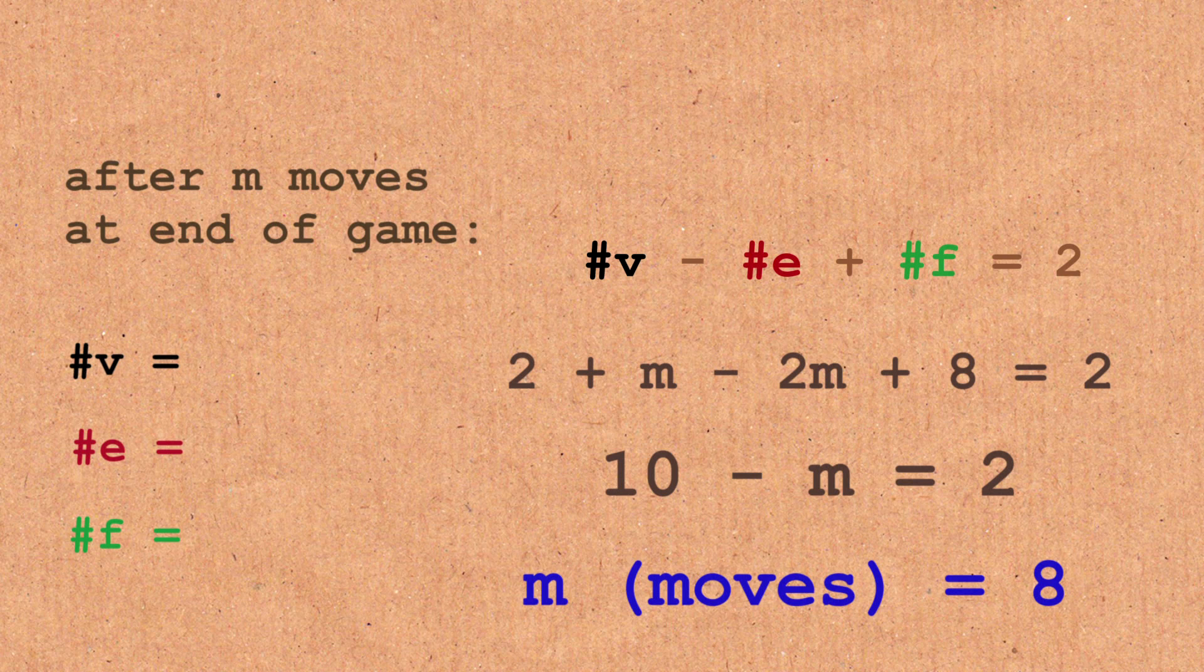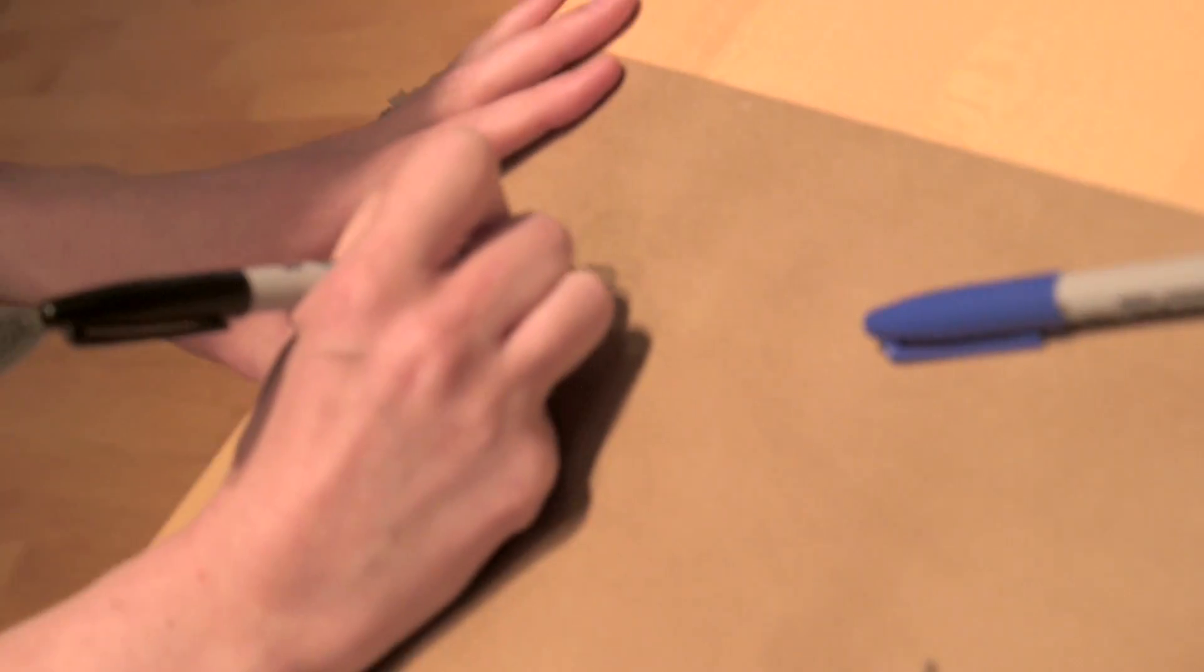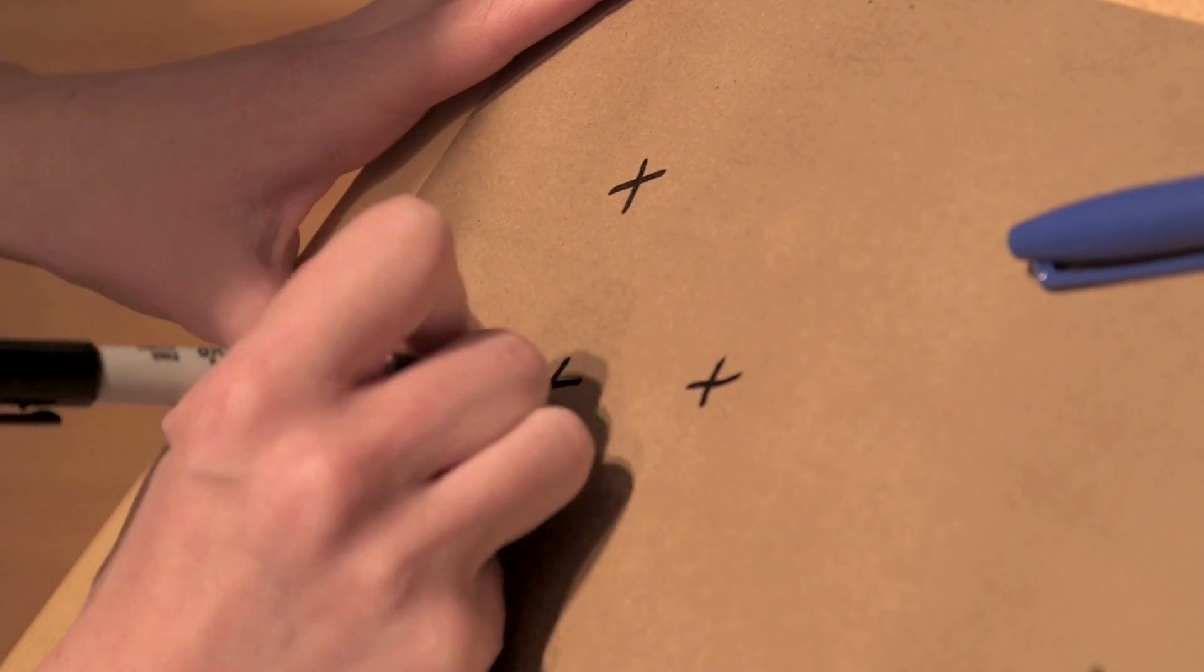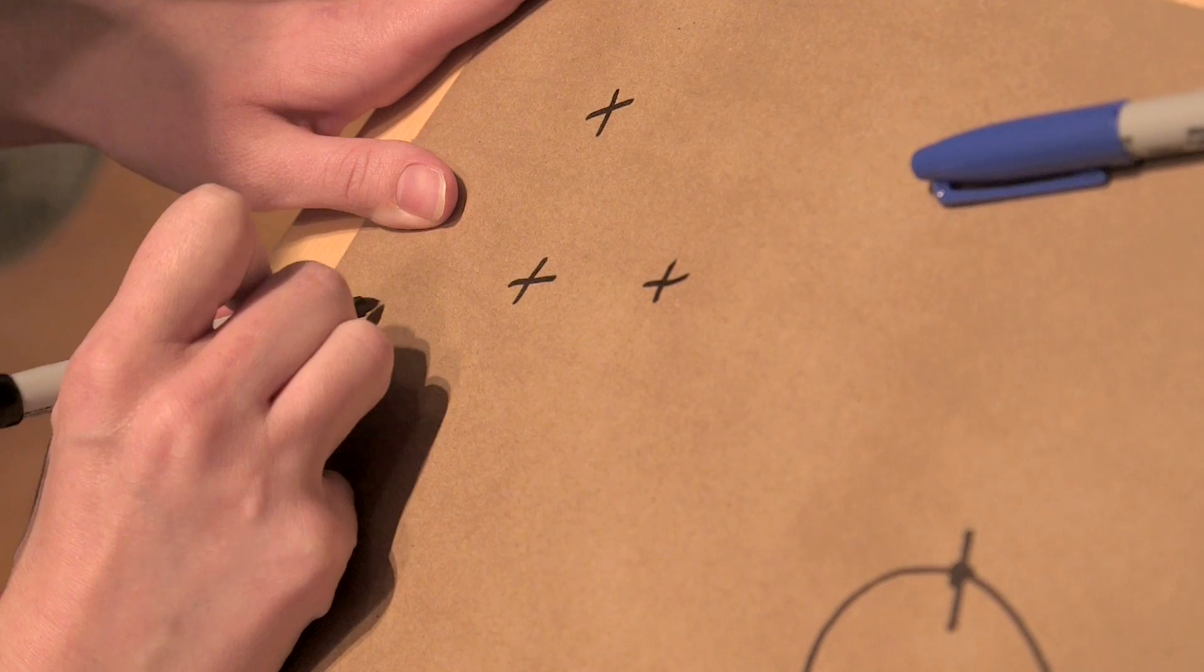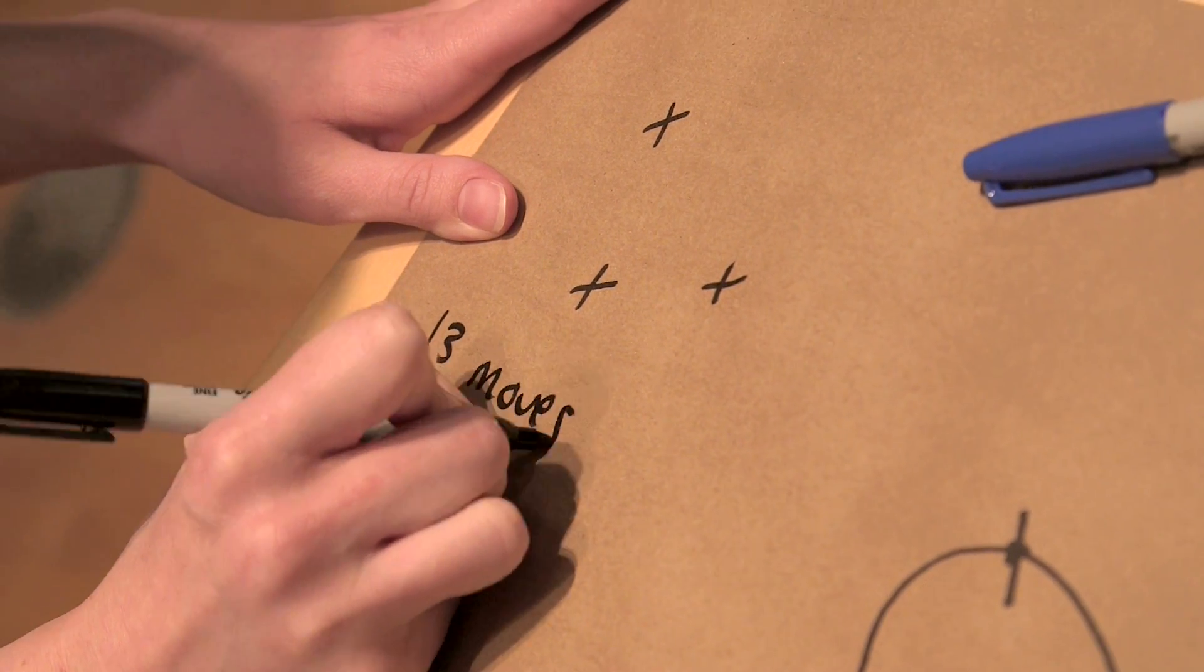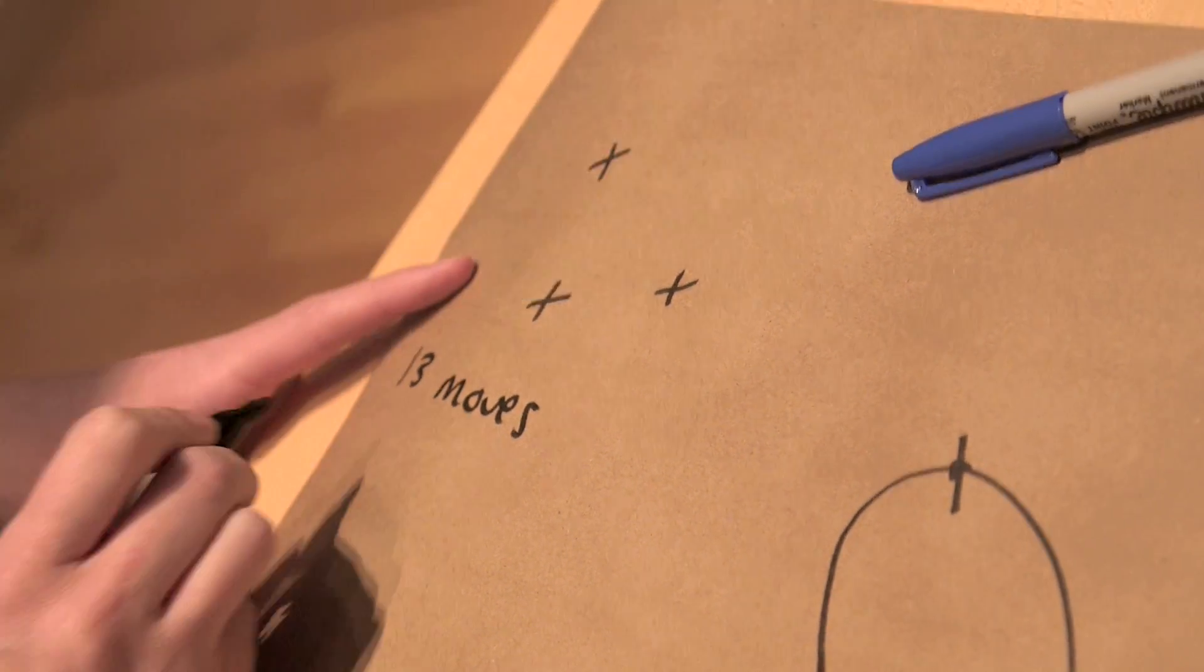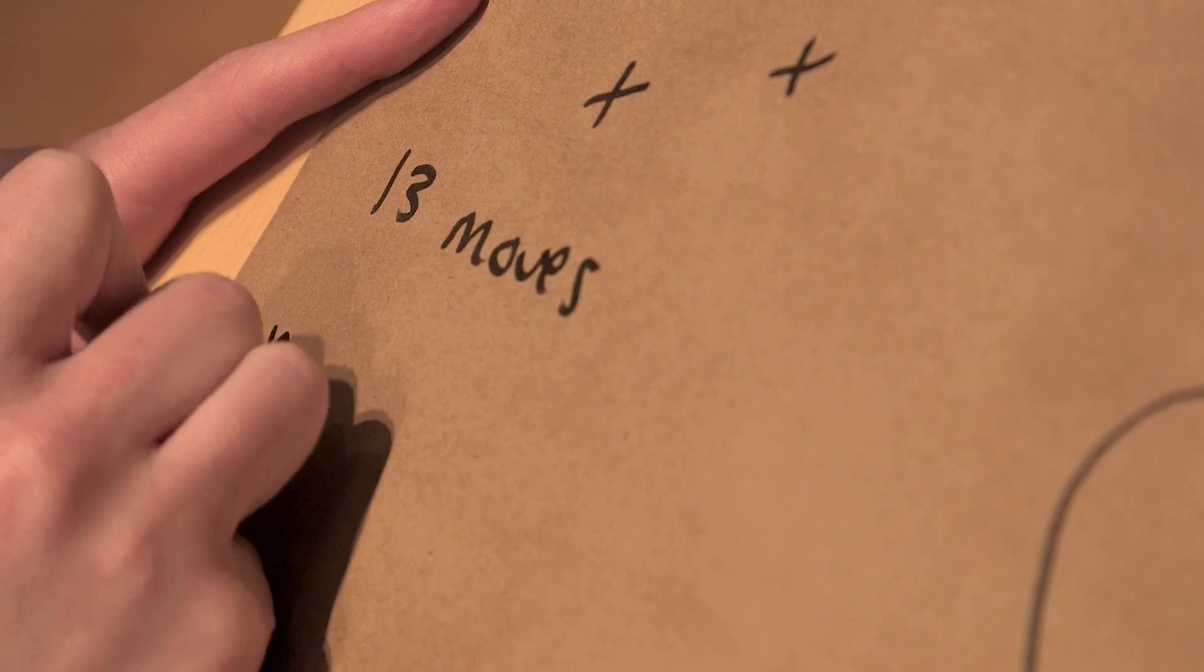But what if you had insisted that you wanted to go second? Well, I still could have won. Aww, you couldn't. I could. What would you have done? I would have started with three crosses instead of two. So if you start with three, then the game ends after thirteen moves.